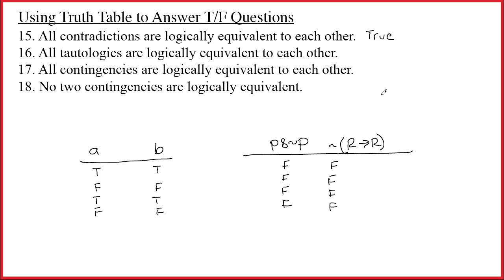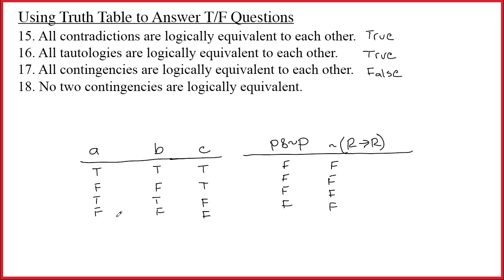All tautologies are logically equivalent to each other — tautologies are always true, so every tautology is equivalent to every other. That's true. All contingencies are logically equivalent to each other? If we have contingency A with TFTF and contingency C with TTFF, they are clearly not identical. So all contingencies are logically equivalent — obviously false. Finally, no two contingencies are logically equivalent? Here are two contingencies that are logically equivalent to each other, so this is clearly false.